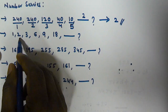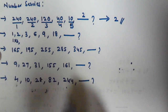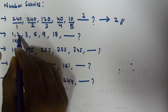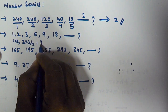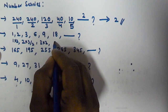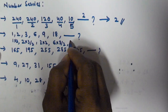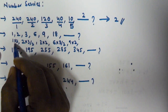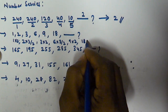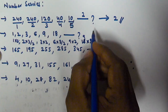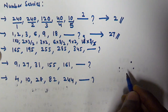For problem 2: from 1 to 2 we multiply by 2; from 2 to 3 we multiply by 3/2; from 3 to 6 we multiply by 2; from 6 to 9 we multiply by 3/2; from 9 to 18 we multiply by 2. So the pattern alternates: multiply by 2, then multiply by 3/2. The next step is multiply by 3/2, so 18 × 3/2 = 27. The next number in this series is 27.